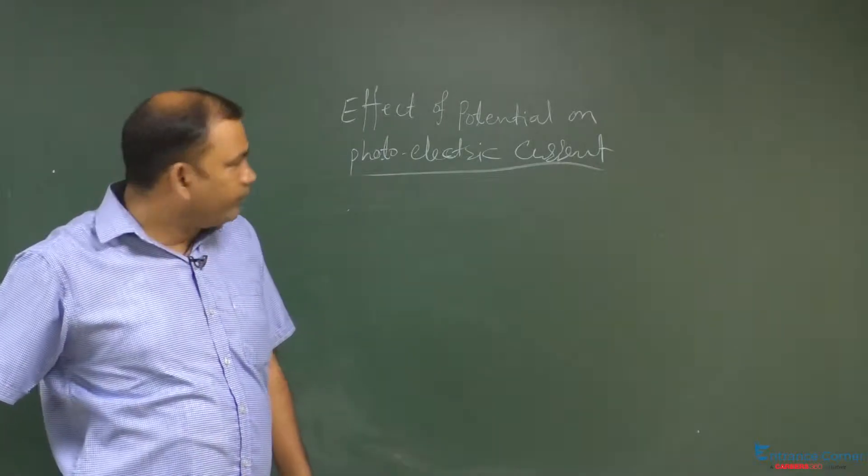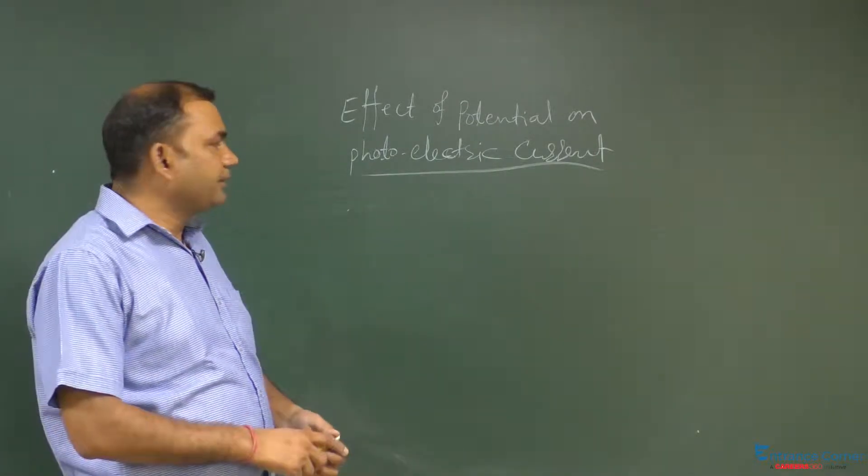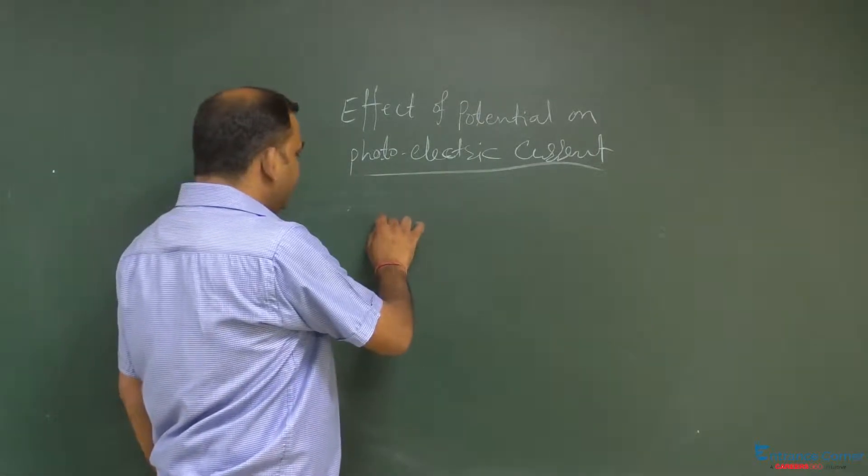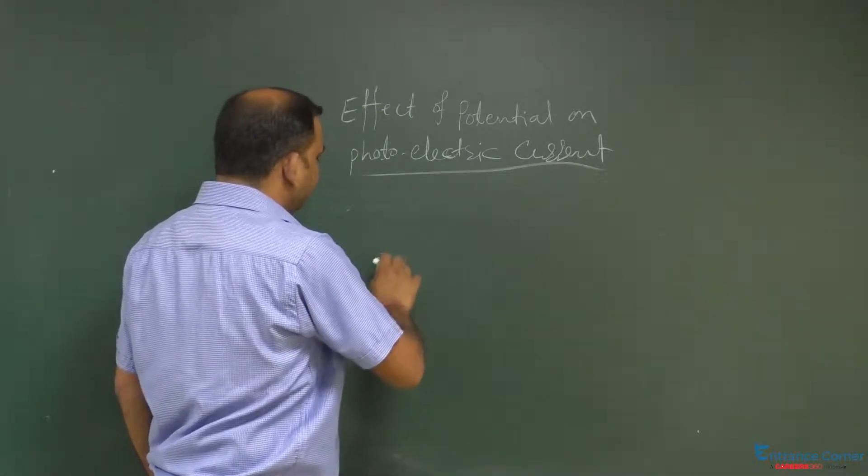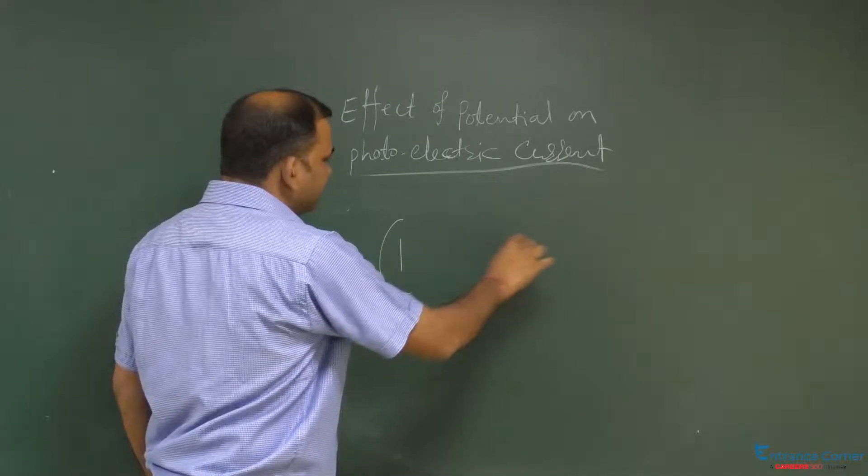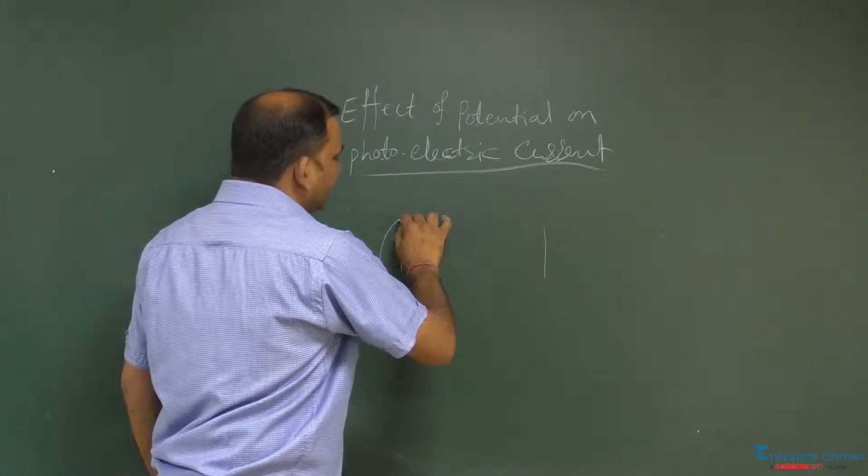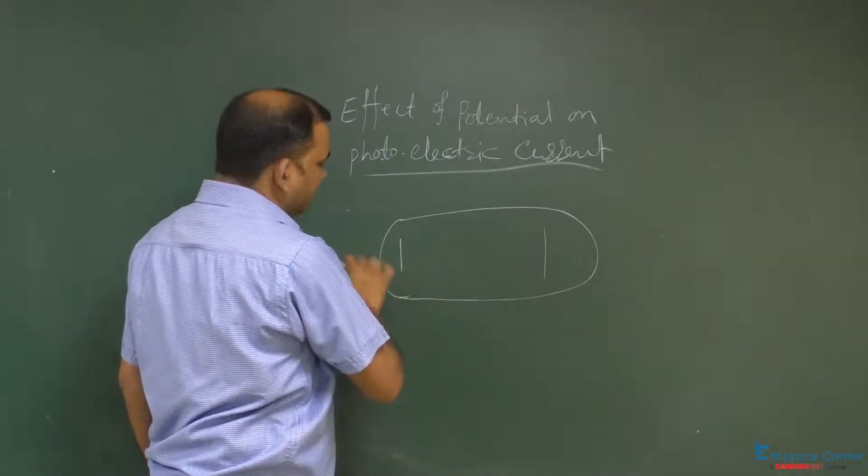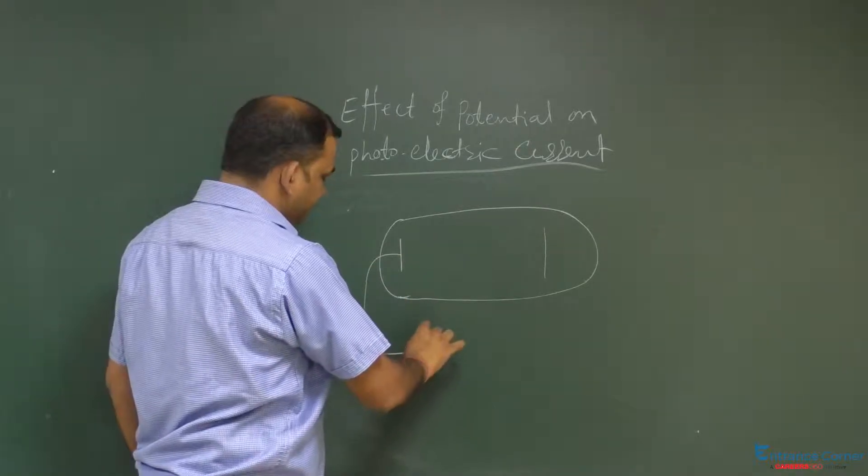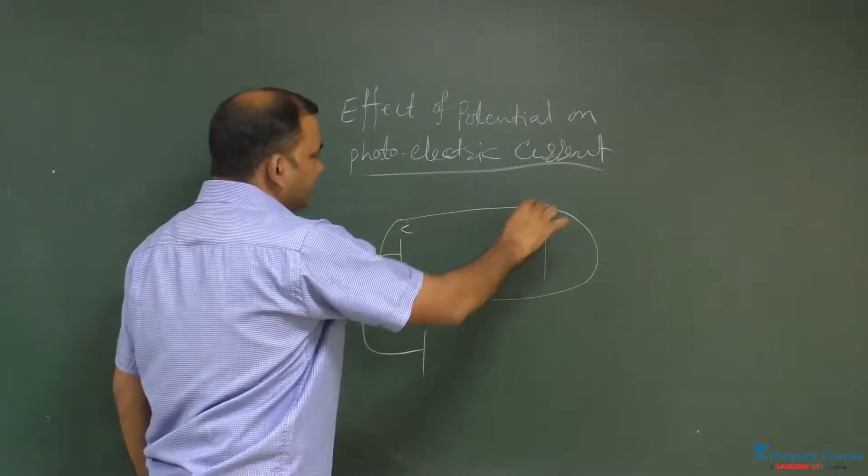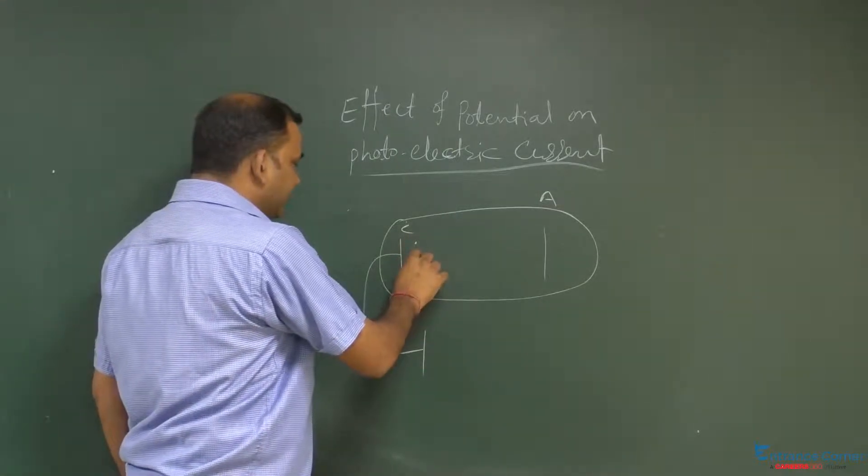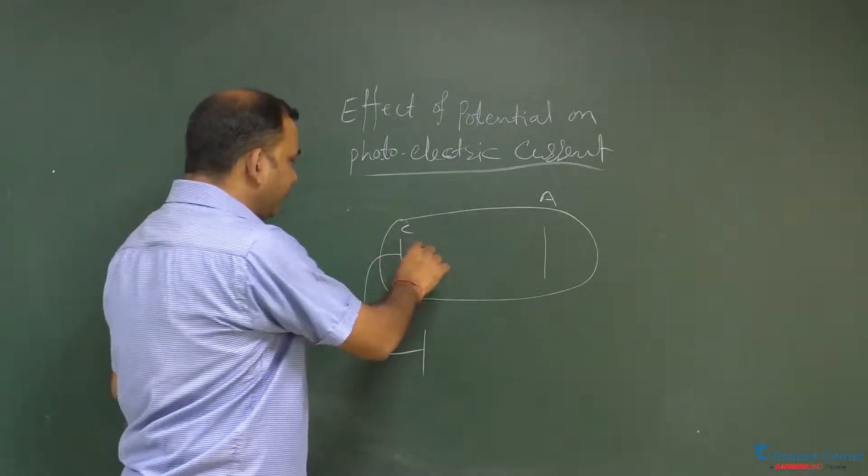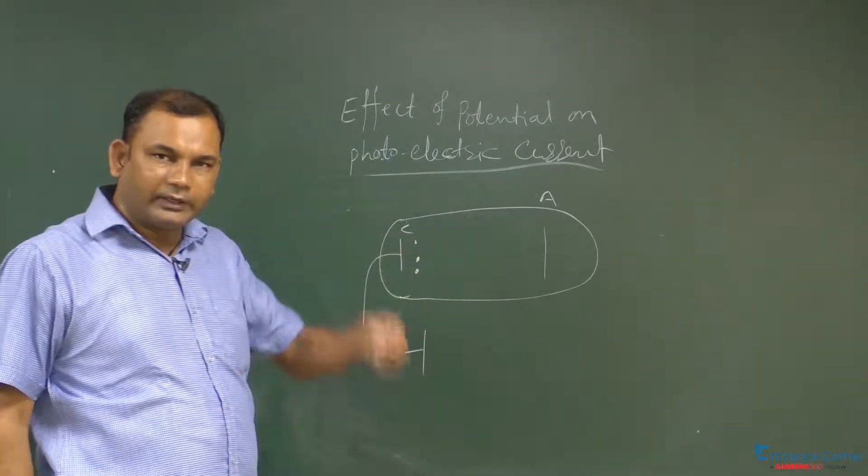Effect of potential on photoelectric current. When there are a number of electrons ejected in the experimental setup, we know that this is the cathode, this is the anode, and photoelectrons are ejected from there.